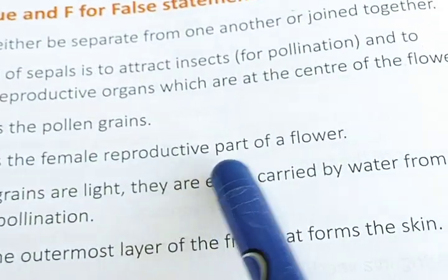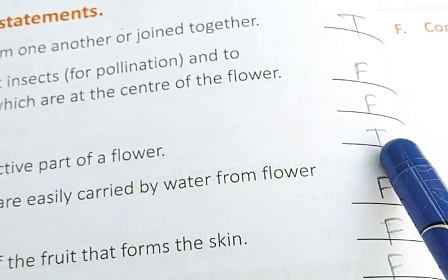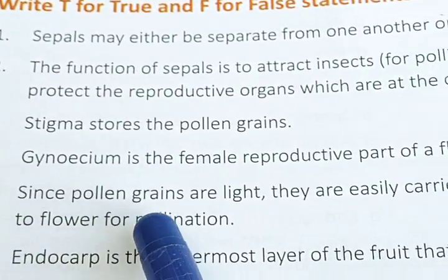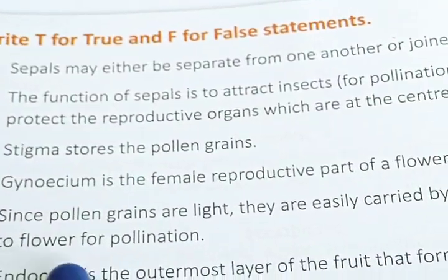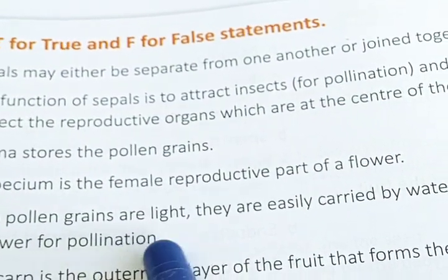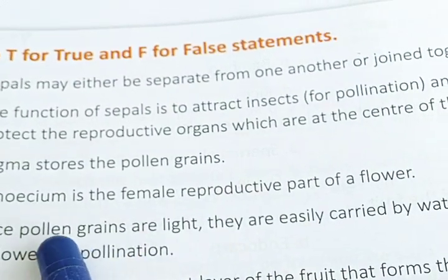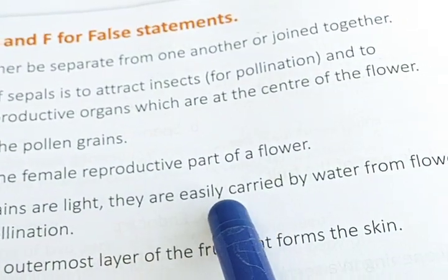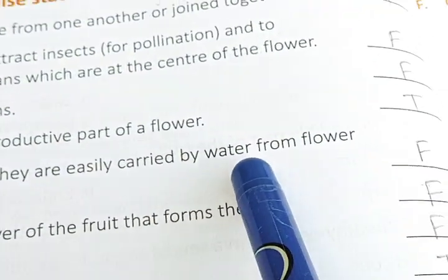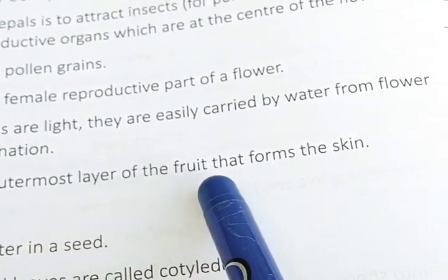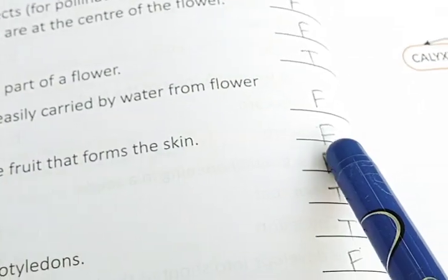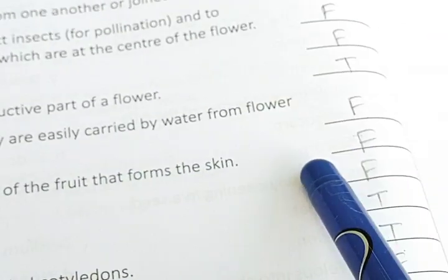Gynoecium is the female reproductive part of the flower — true. Since pollen grains are light, they are easily carried by water from flower to flower for pollination — those pollen grains that are light are easily carried by wind, not water, so the answer is false. Endocarp is the outermost layer of the fruit that forms the skin — false, endocarp is actually the innermost layer, so it is false.